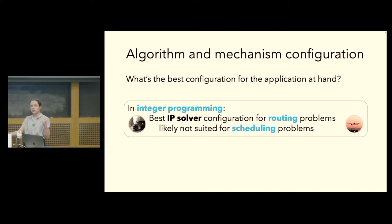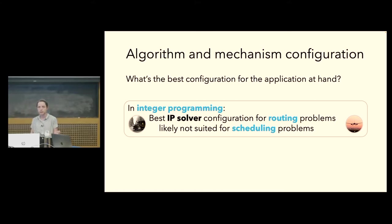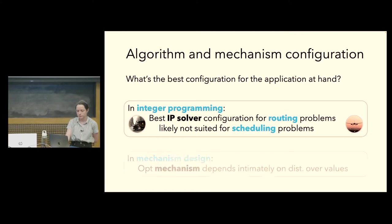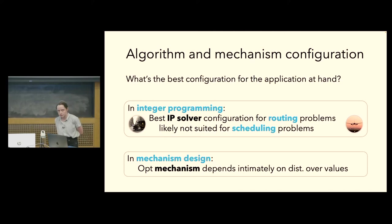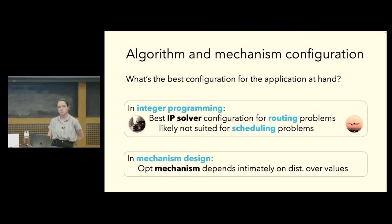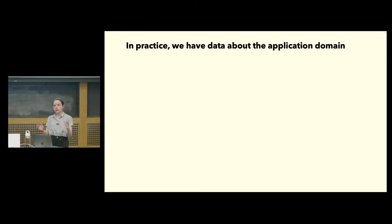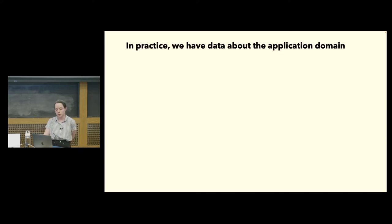This raises the question: what's the best configuration of my algorithm or mechanism for the particular application domain at hand? In integer programming, the best solver configuration for solving routing problems a shipping company solves day after day is probably not well-suited for solving the scheduling problems an airline solves week after week. Similarly, in mechanism design, the optimal mechanism depends very intimately on the specific distribution over agents' values. In practice, we often have ample data about the particular application we can harness to optimize performance.